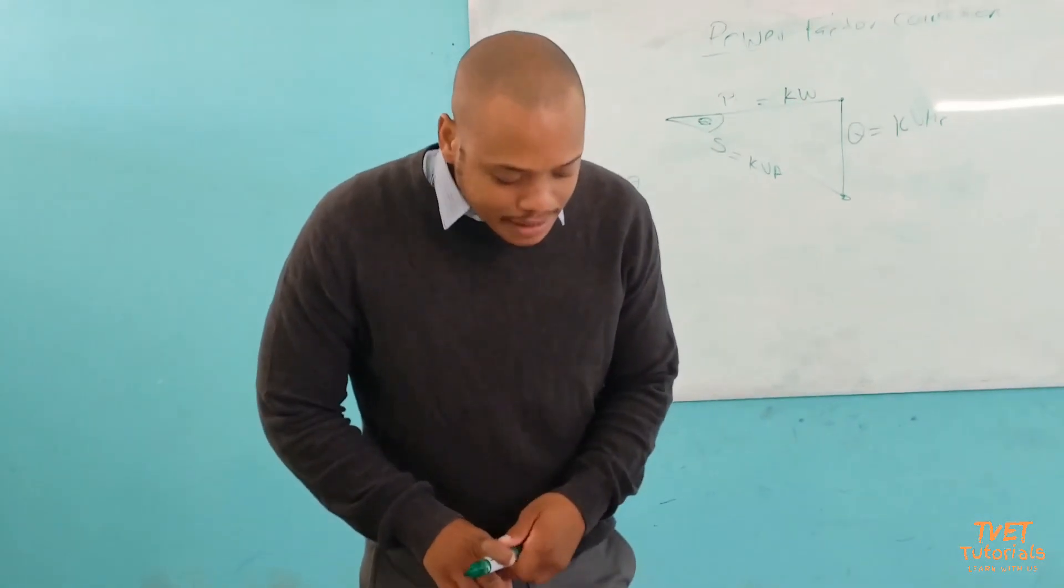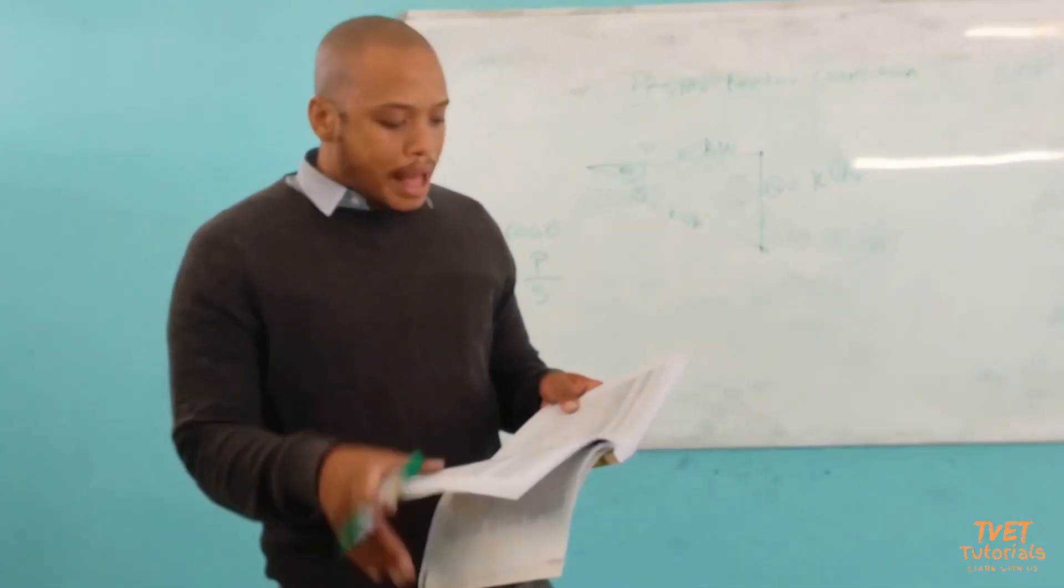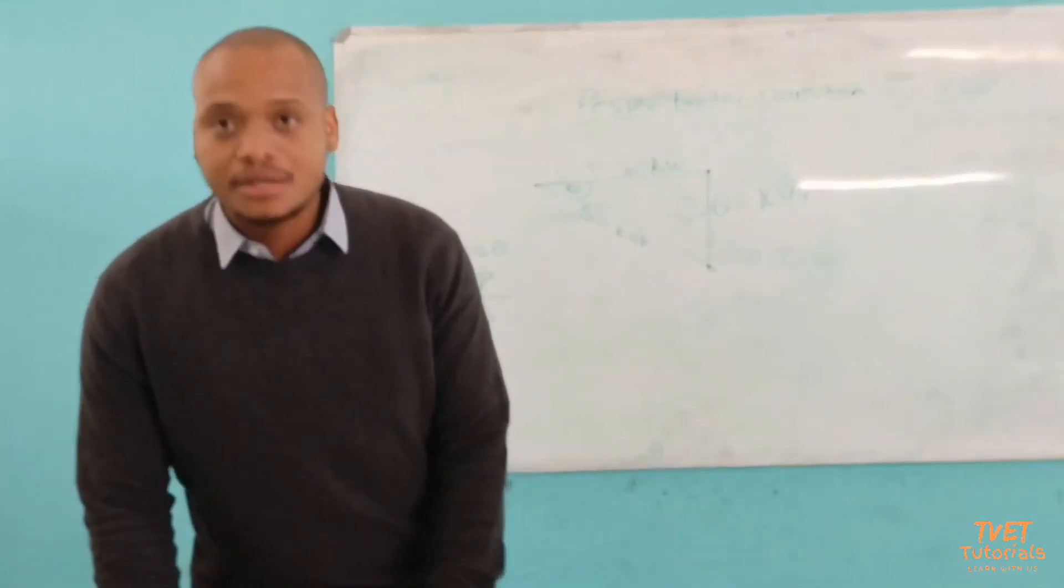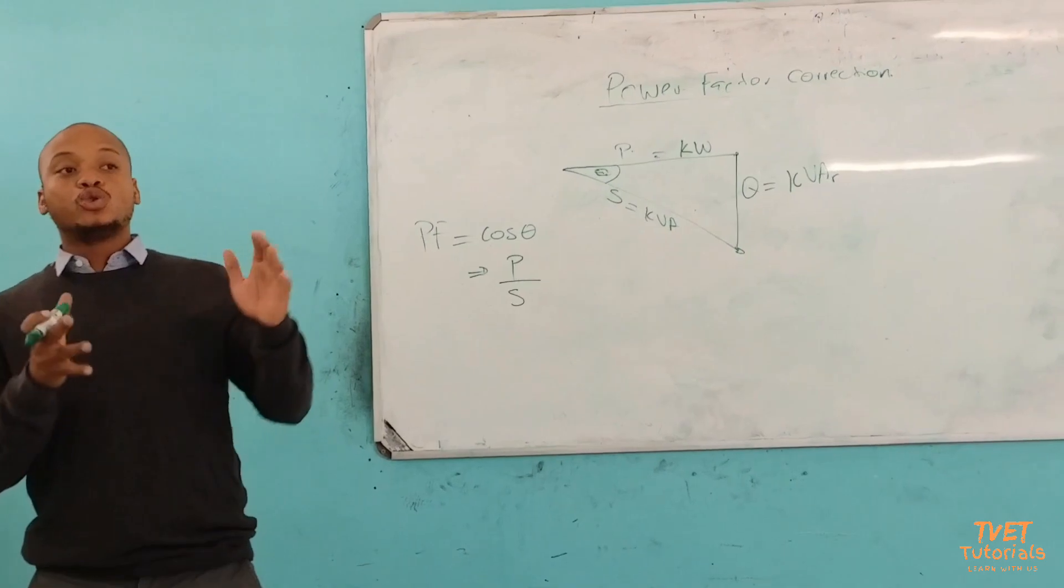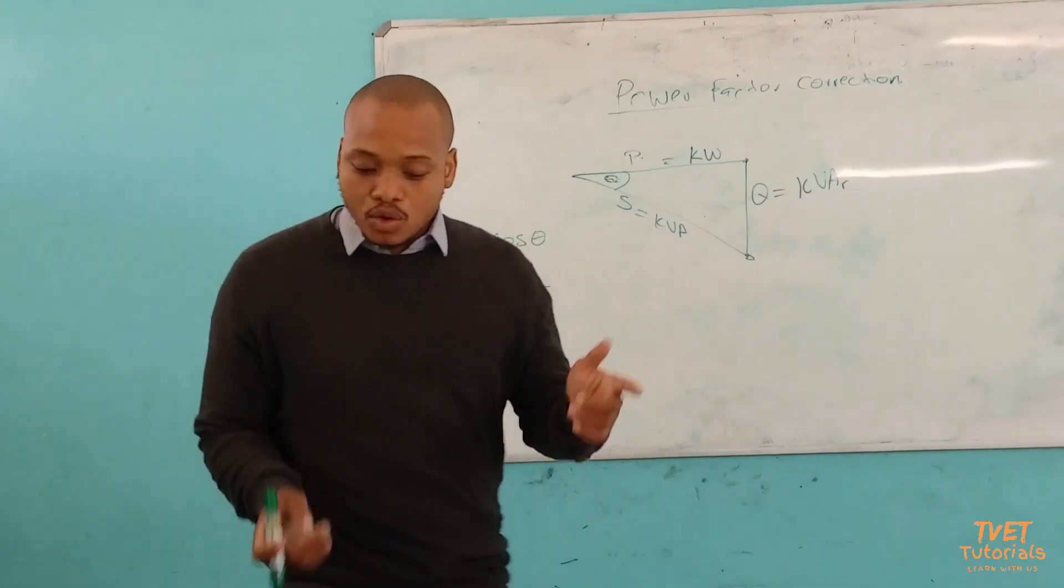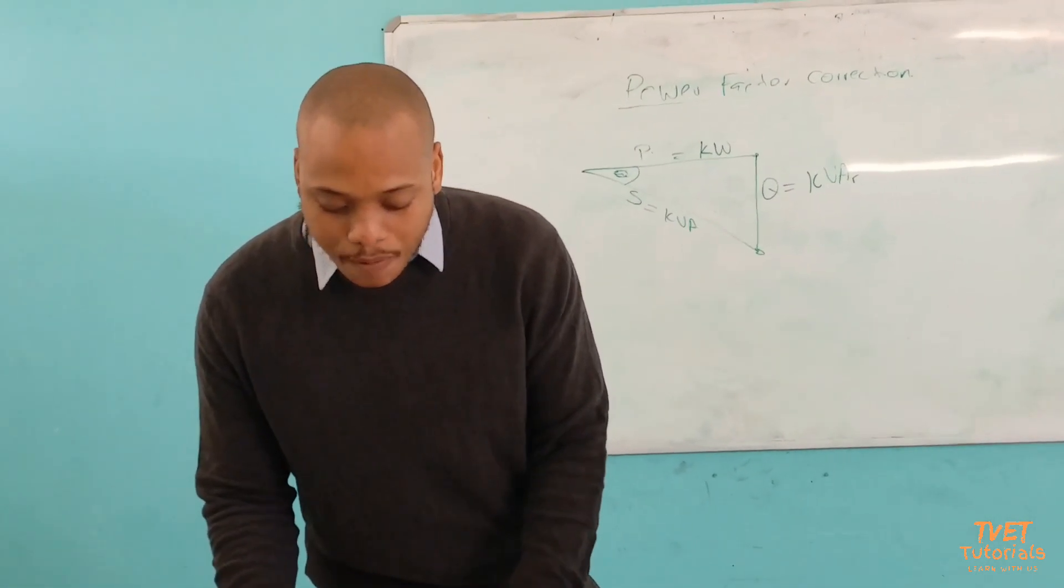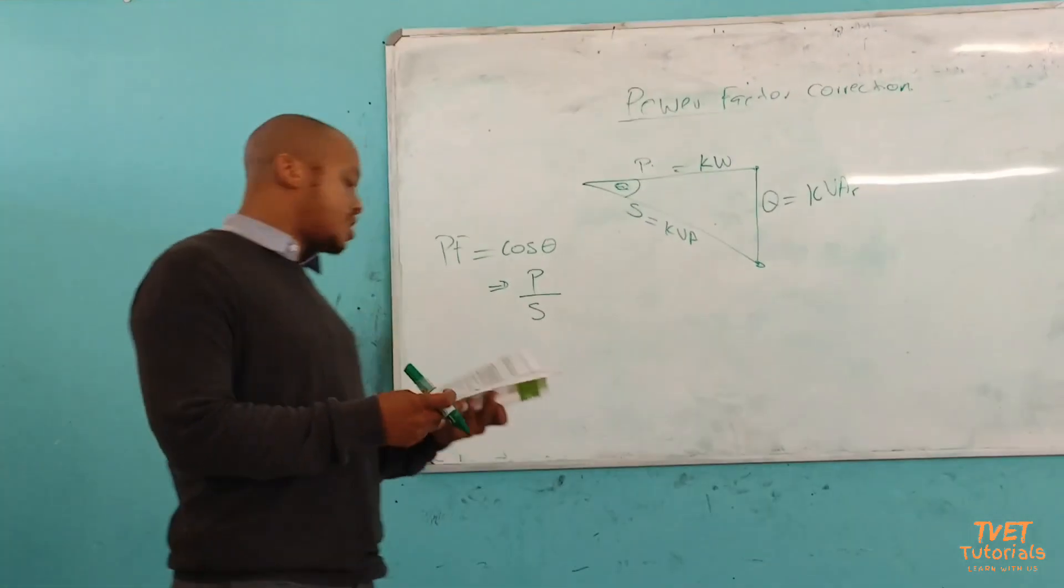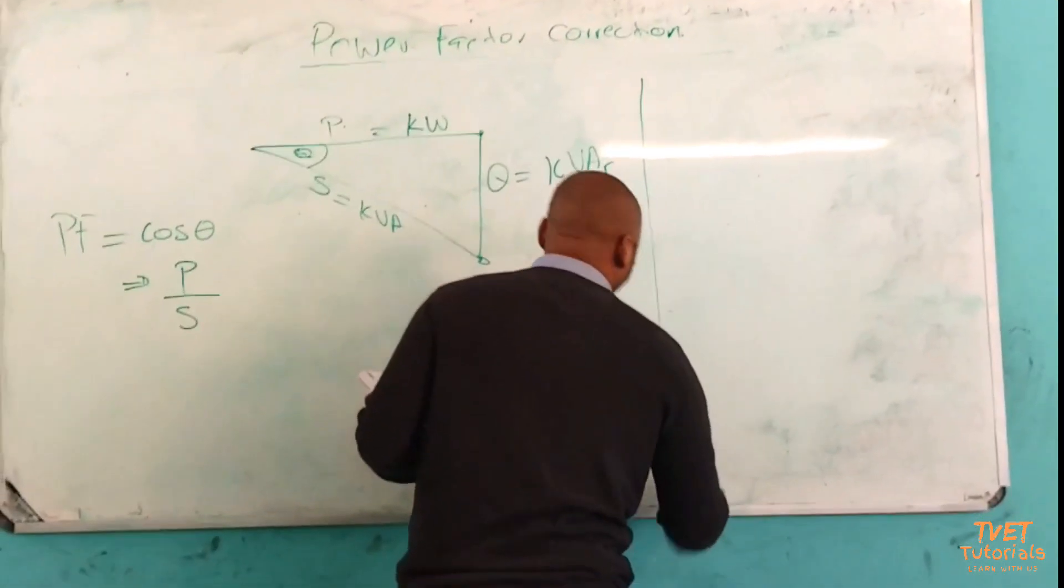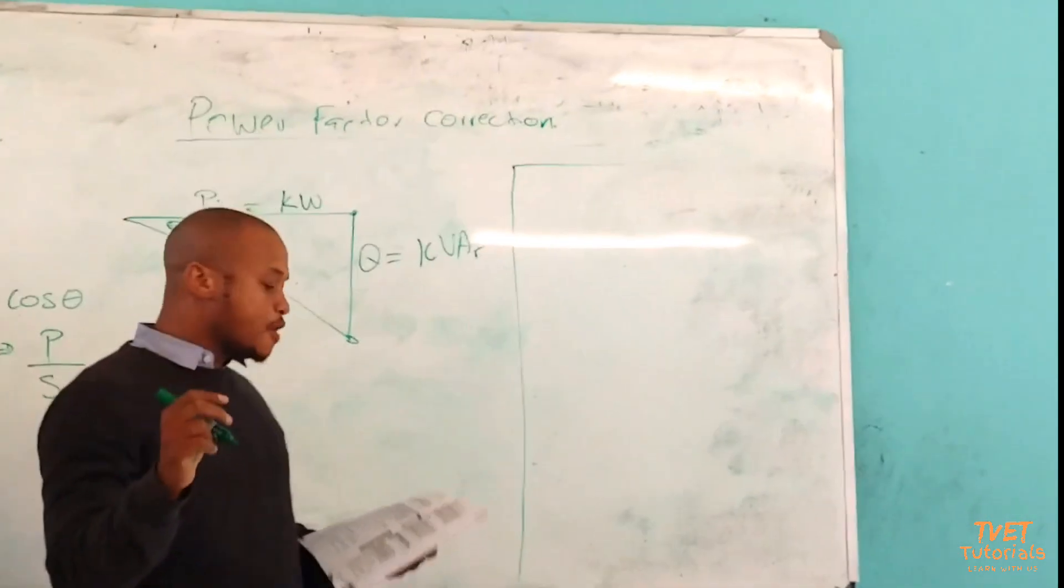So let us look at the financial implications. One of the detrimental effects is the consumer pays more for maximum demand. So that's a financial implication. If you do not correct power factor, you end up paying more. So we get power factor correction and also how we can reduce demand.